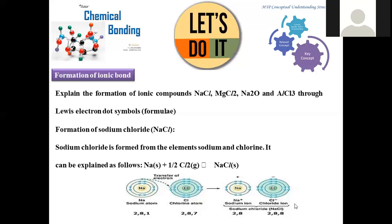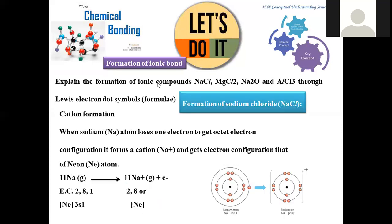Both resemble the electronic configuration of their nearest noble gas. Sodium initially has 1s² 2s² 2p⁶ 3s¹, and chlorine has 1s² 2s² 2p⁶ 3s² 3p⁵. They finally convert into completely filled octet configuration. Here, step-by-step demonstration is carried out.